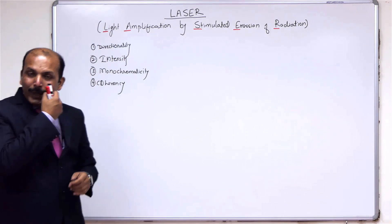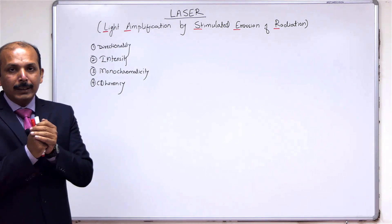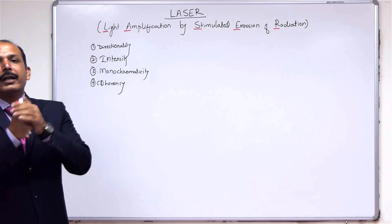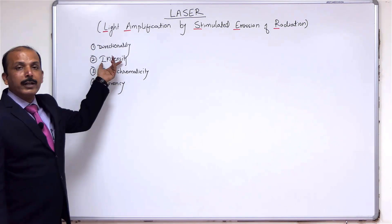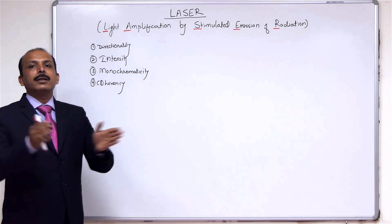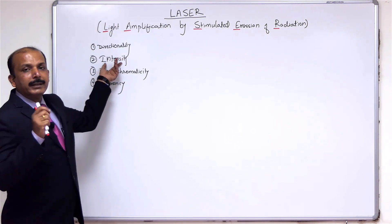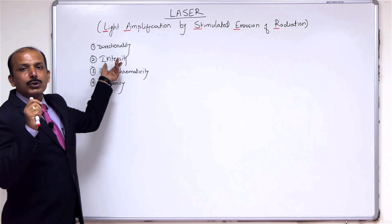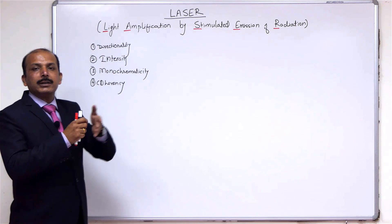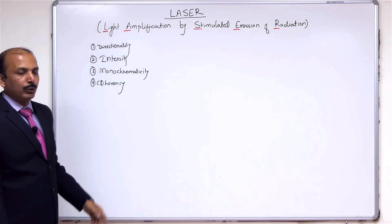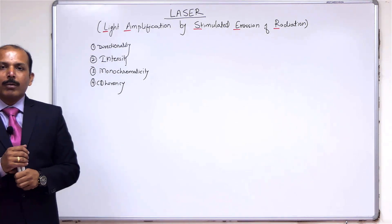The intensity due to laser is very, very high because all the photons emitted by laser are concentrated in a very small region. But for an ordinary source, intensity is scattered and distributed over an area. Intensity is basically the number of photons colliding per unit area, which is very high for laser and very low for ordinary light sources.